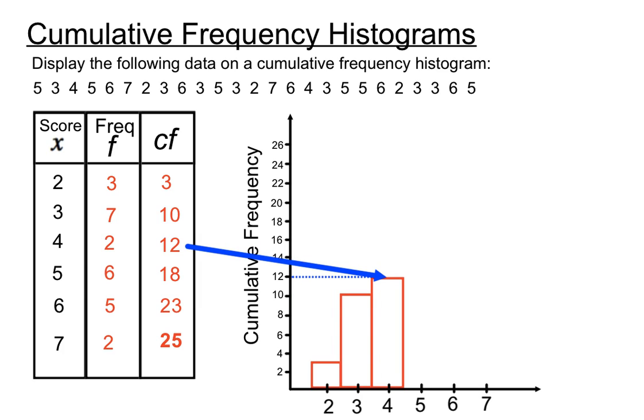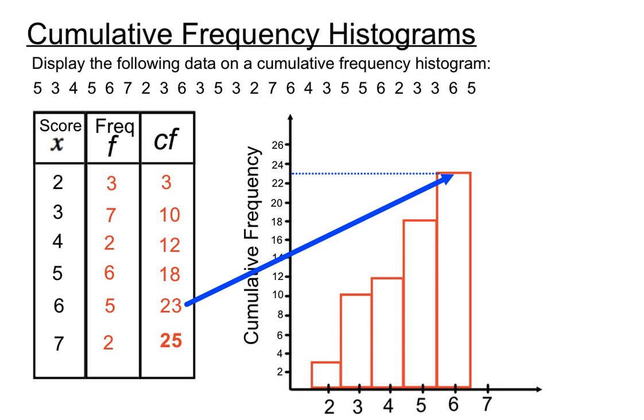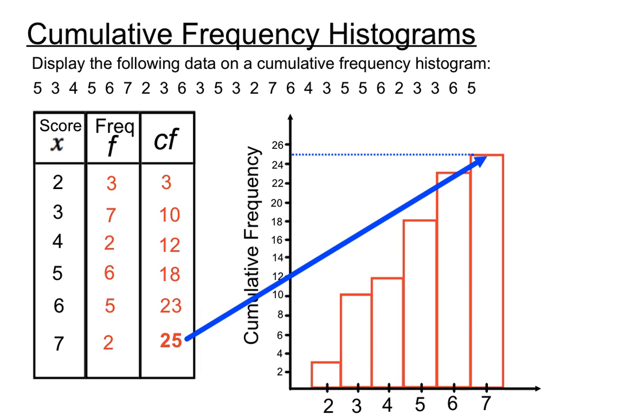The score of 4 has a cumulative value of 12. We'll graph the 18 as a cumulative frequency total for the score of 5. The score of 6, when we add that to the total, we've got 23 so far. And 25 altogether.